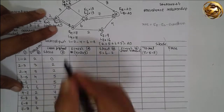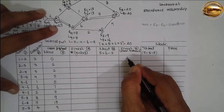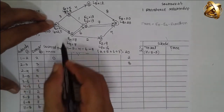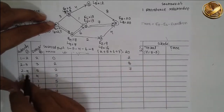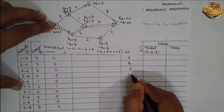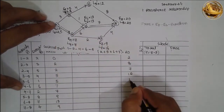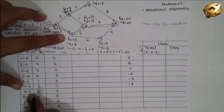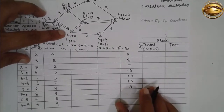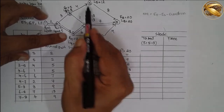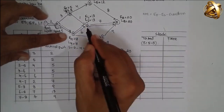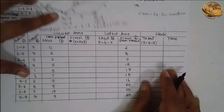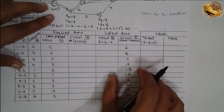Latest finish times from the diagram: activity 1-2 is 2; activity 2-3 is 8; activity 2-4 is 7; activity 3-5 is 12; activity 3-6 is 13; activity 4-6 is 13; activity 4-7 is 16; activity 5-8 is 20; activity 6-8 is 20; activity 7-8 is 20.